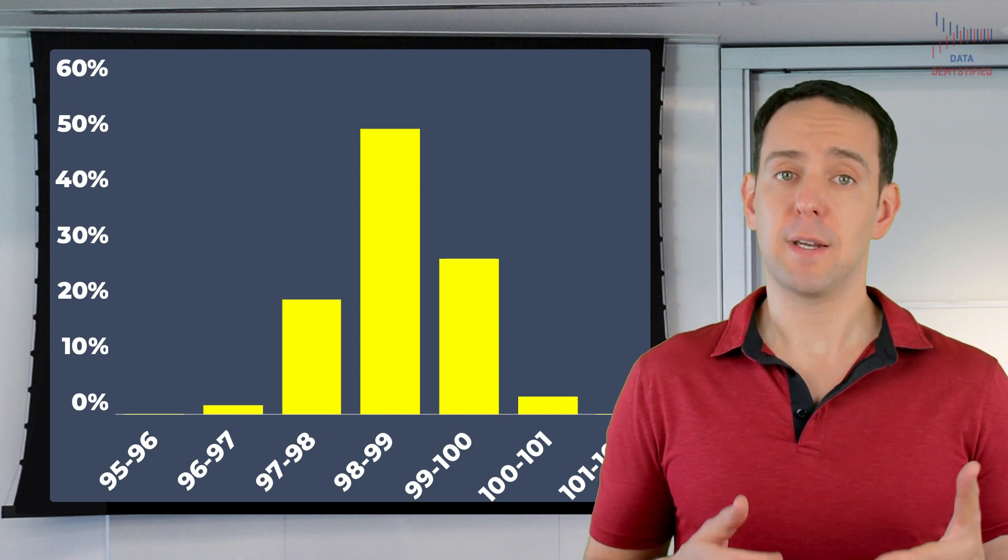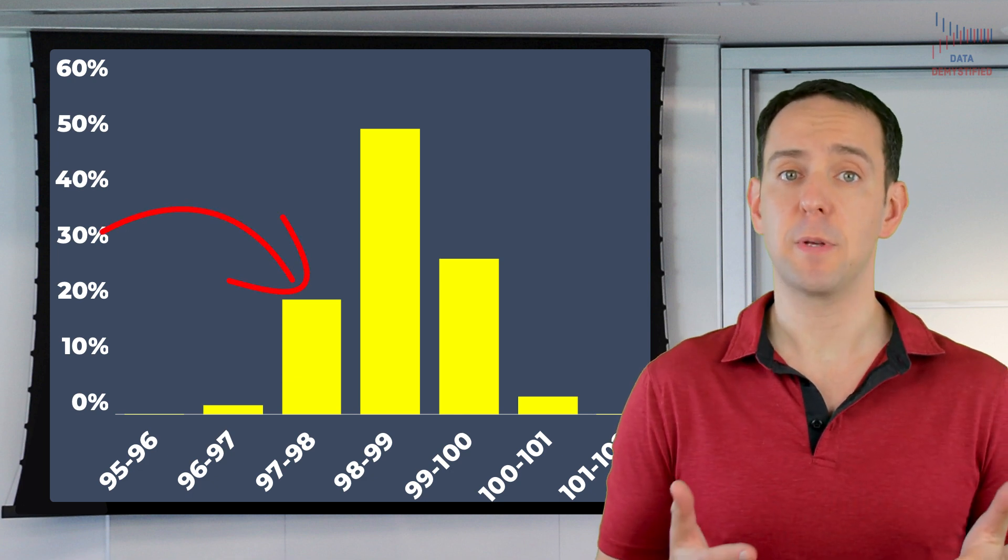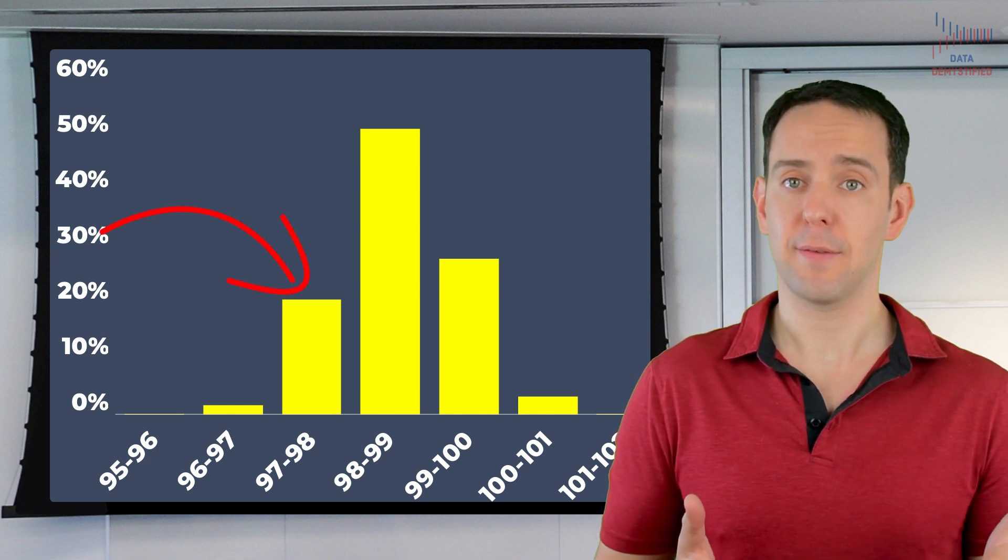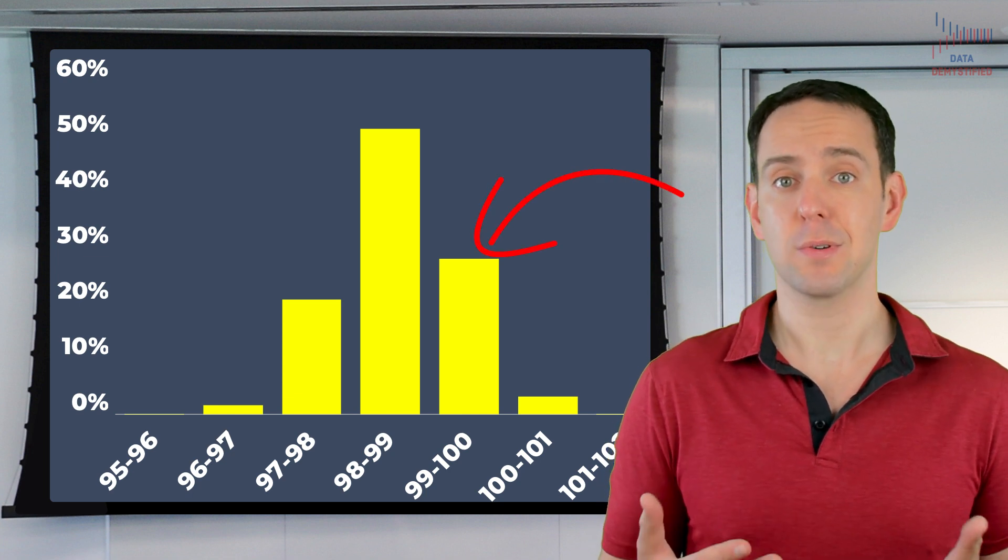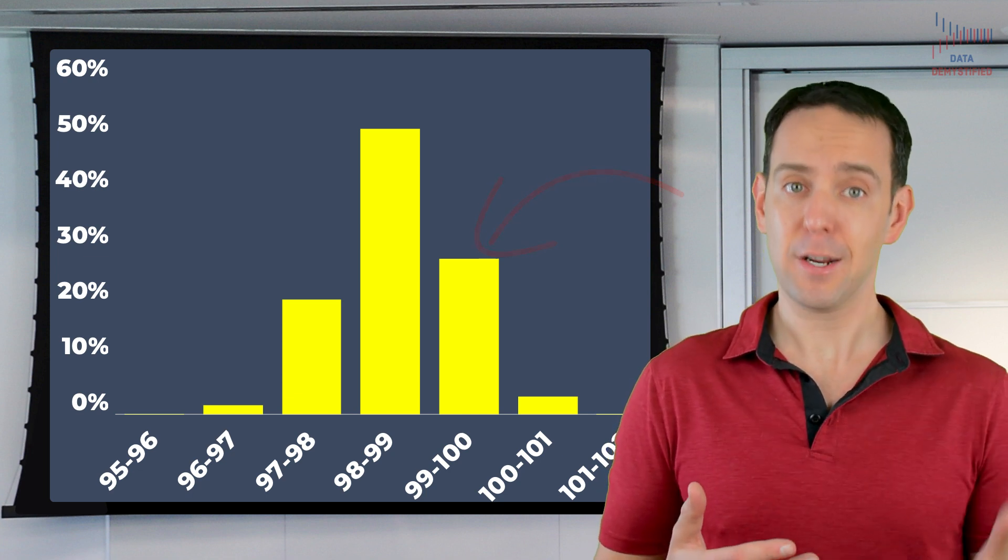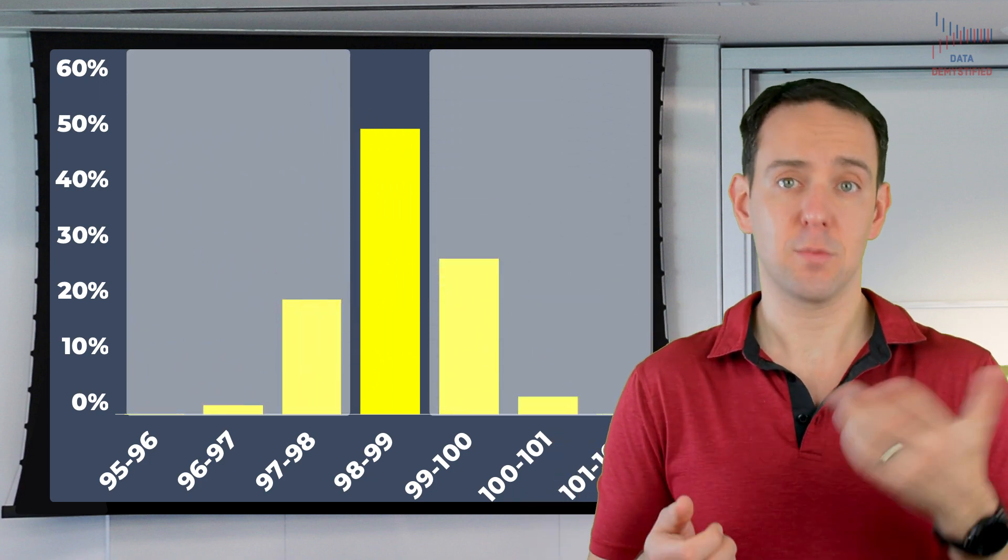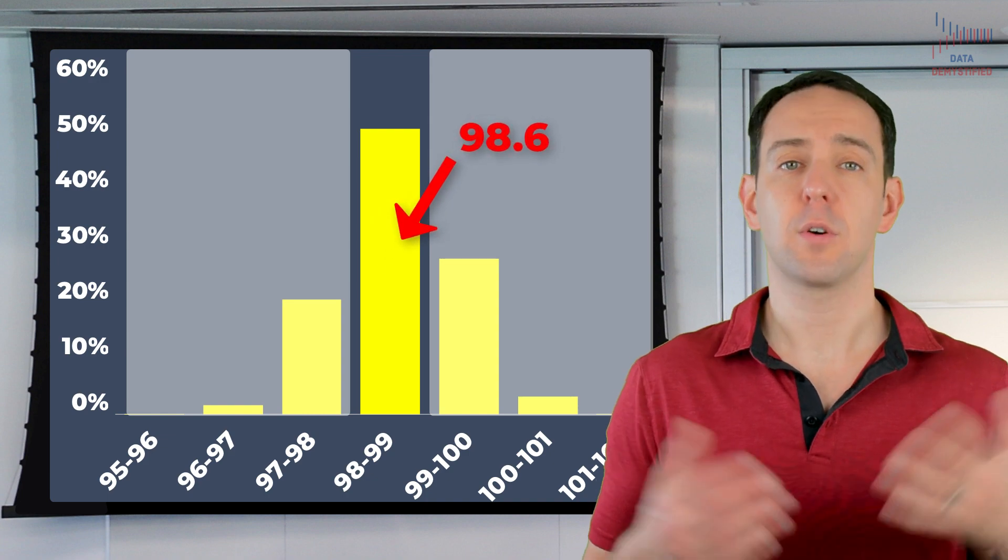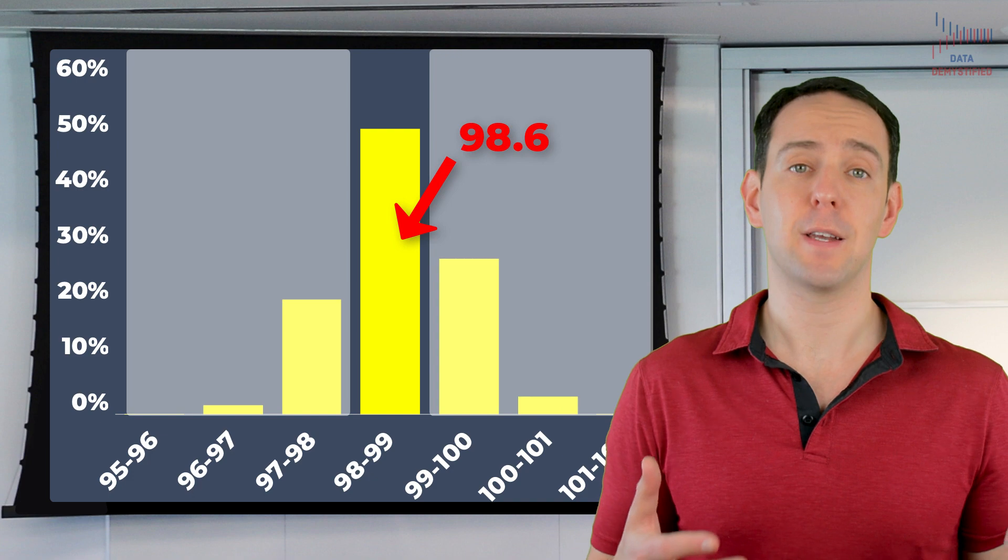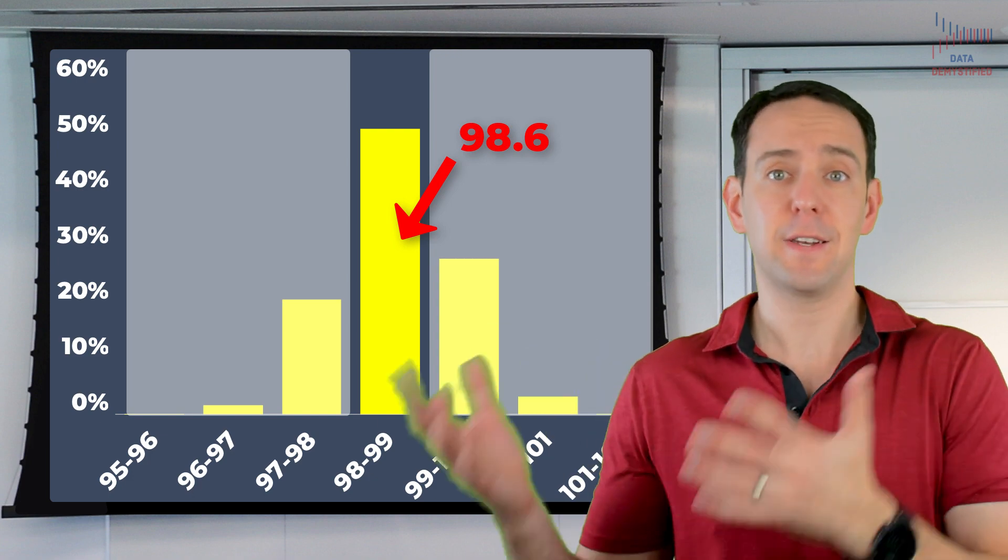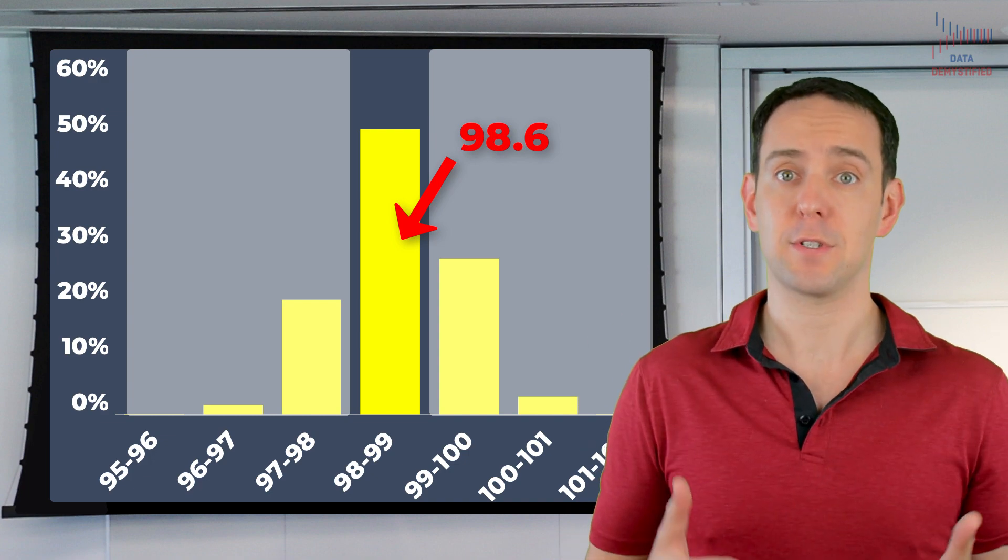In fact, let's simplify this chart a bunch by grouping temperatures like this. Each bar now represents the body temperature of people for each degree Fahrenheit. So for instance, about 20% of people had body temperatures between 97 and 98 degrees. Another 24% or so had body temperatures between 99 and 100 degrees. The point is that actually most people had body temperatures outside of the range of 98 to 99 degrees, where 98.6 sits.